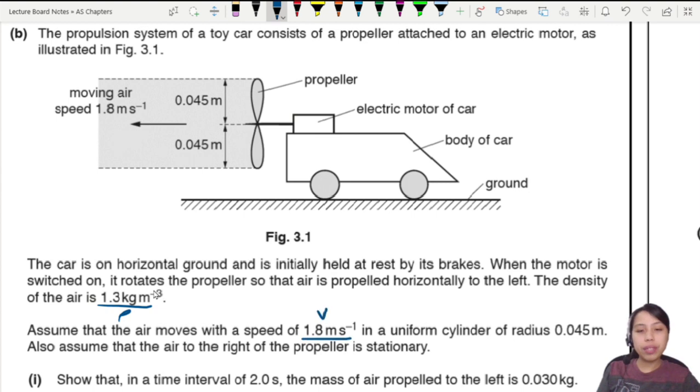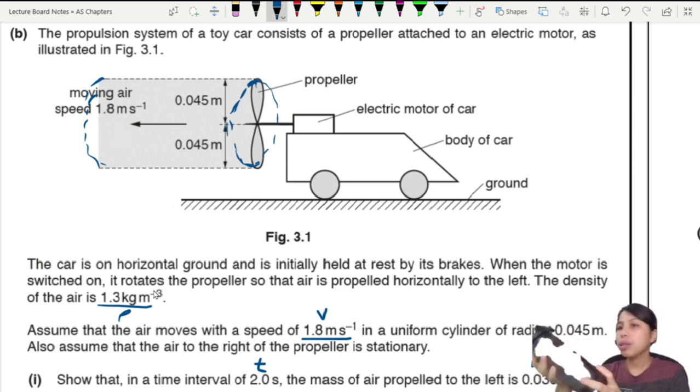Assume the air moves with a constant speed of V in the shape of a uniform cylinder. So you can imagine now this propeller is rotating in a circle. So the air that comes out is in the shape of a cylinder. Assume that the air to the right of the propeller is stationary. So what we need to do is we need to show that in the time interval of two seconds, the mass of the air propelled is 0.03 kg.